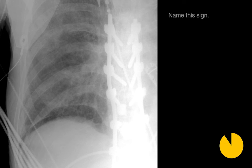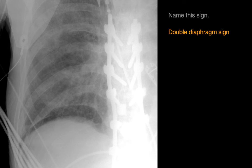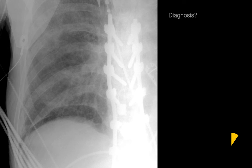Please name this sign. At the right lung base on this image we see two curvilinear interfaces. One corresponds to the diaphragm and liver, and the other corresponds to something else. We refer to this as a double diaphragm sign. When we see a double diaphragm sign, we should think about a basilar pneumothorax.